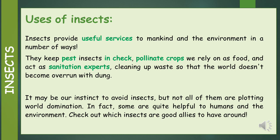Uses of insects. Insects provide useful services to mankind and their environment in a number of ways. They keep pest insects in check, pollinate crops we rely on as food, and act as sanitation experts, cleaning up waste so that the world doesn't become overrun with dung. It may be our instinct to avoid insects, but not all of them are plotting world domination. Some are quite helpful to humans and the environment.